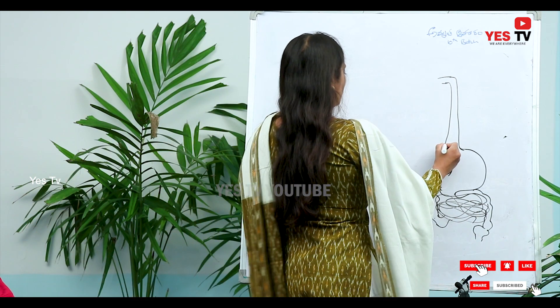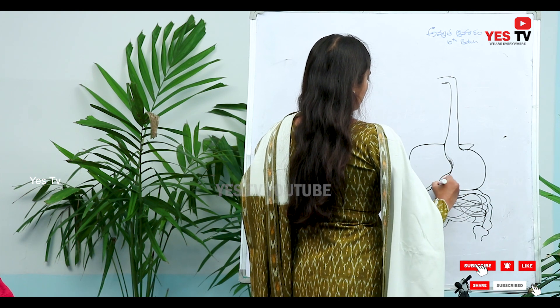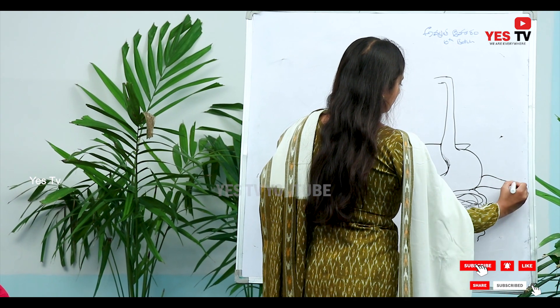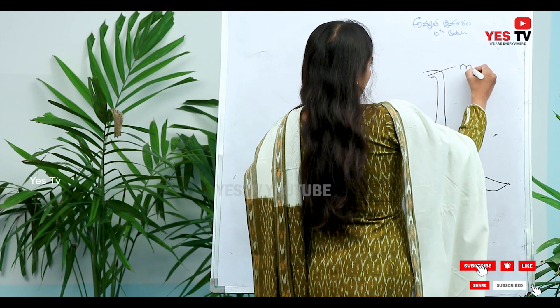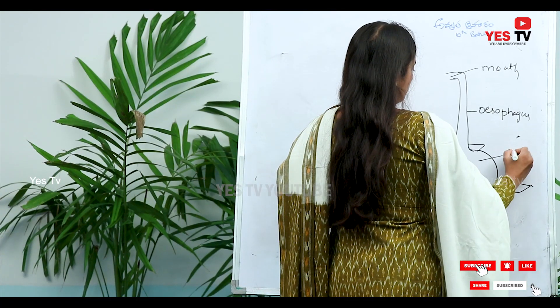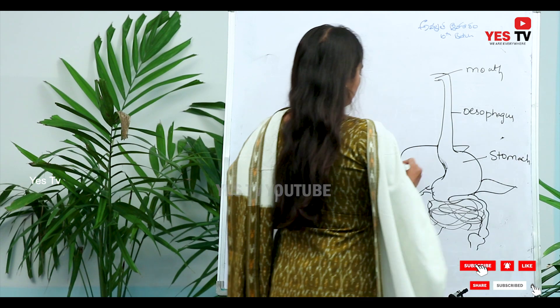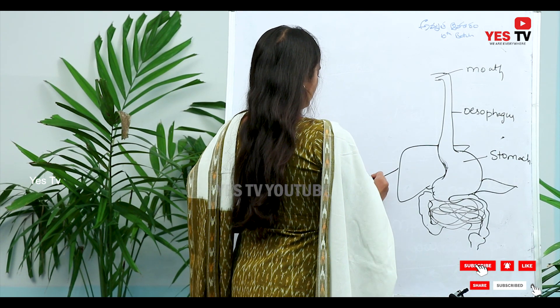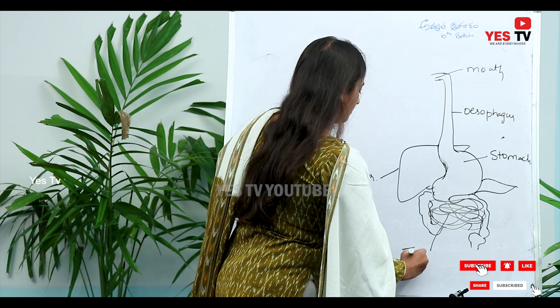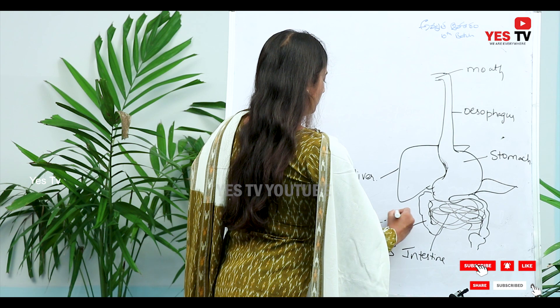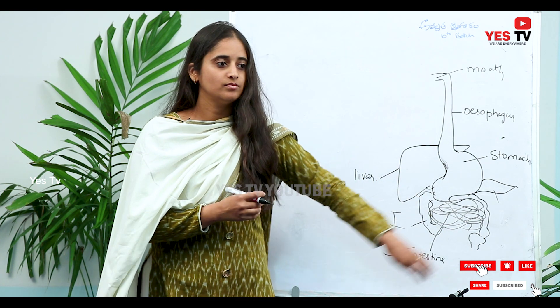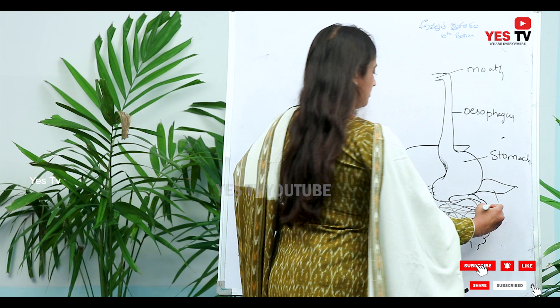For understanding purposes, a rough diagram only. This is proportionately our digestive system — our mouth, esophagus, stomach, liver, intestine, small intestine, large intestine, and the pancreas.